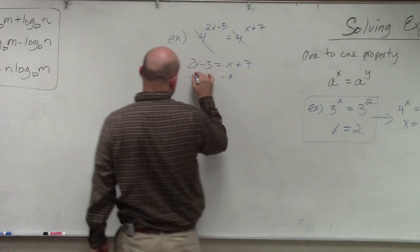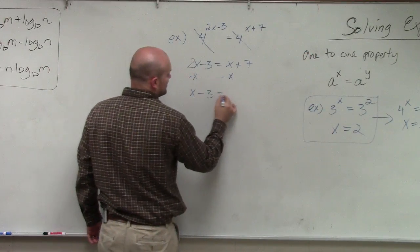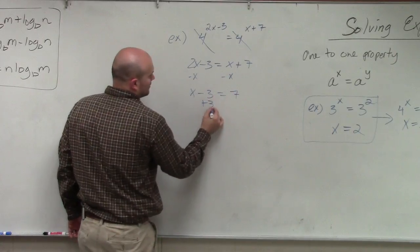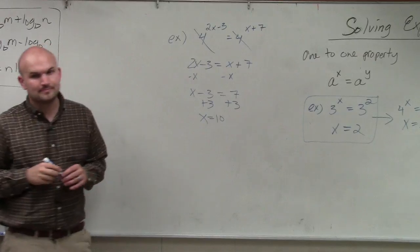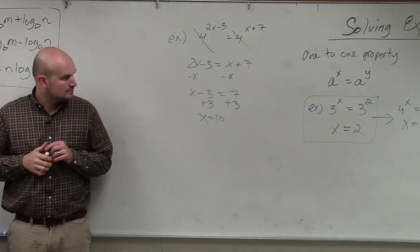So what I'll do is subtract an x on both sides. And I have x minus 3 equals 7, and x equals 10. I said 8, I suppose.